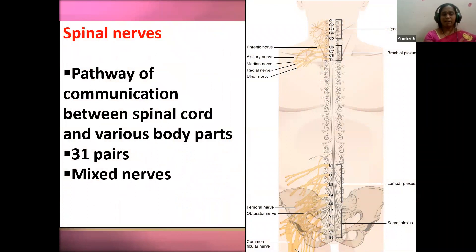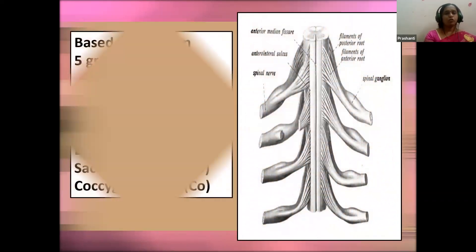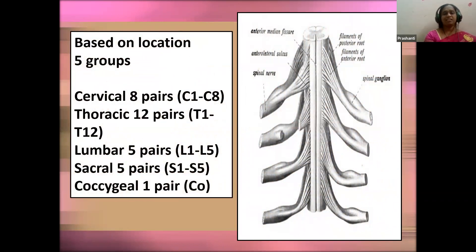Spinal nerves arise from the spinal cord. They are the major mixed nerves — a pathway of communication between the spinal cord and various body parts. They send motor, sensory, and autonomic signals between the central nervous system and the body. Based on location, they are classified into five groups: cervical — 8 pairs; thoracic — 12 pairs; lumbar — 5 pairs; sacral — 5 pairs; and coccygeal — 1 pair.